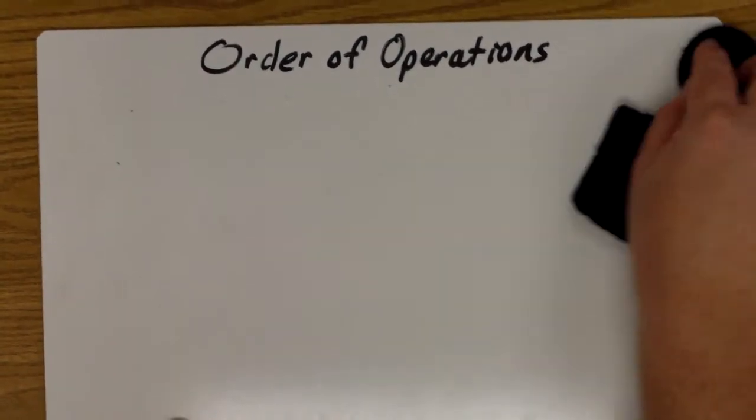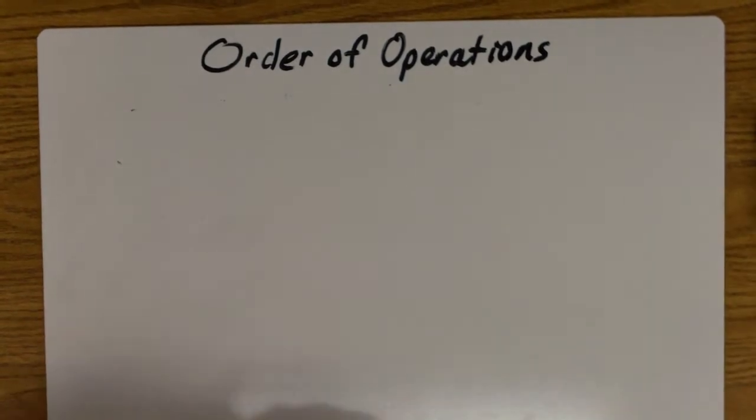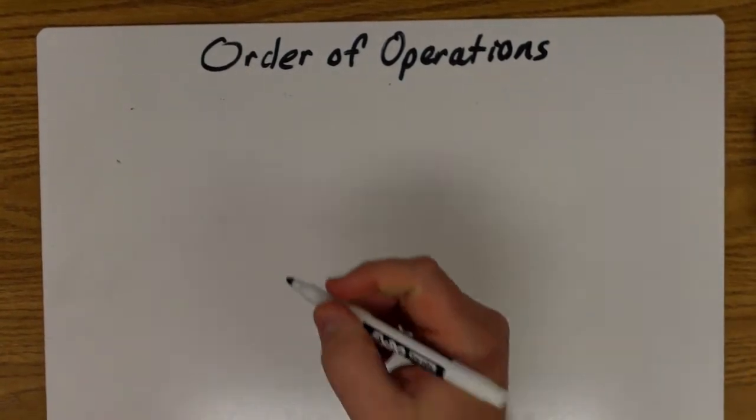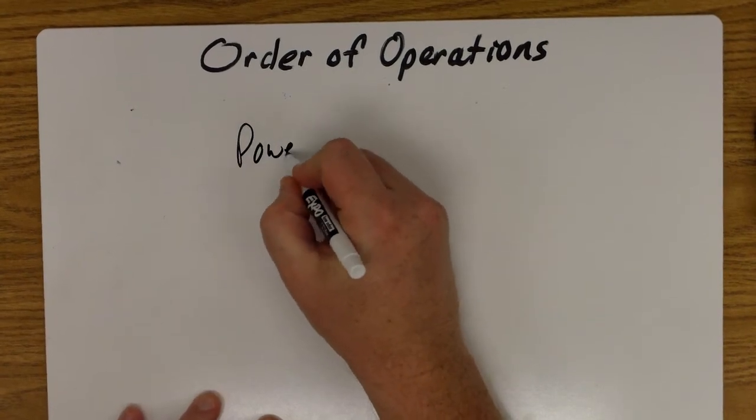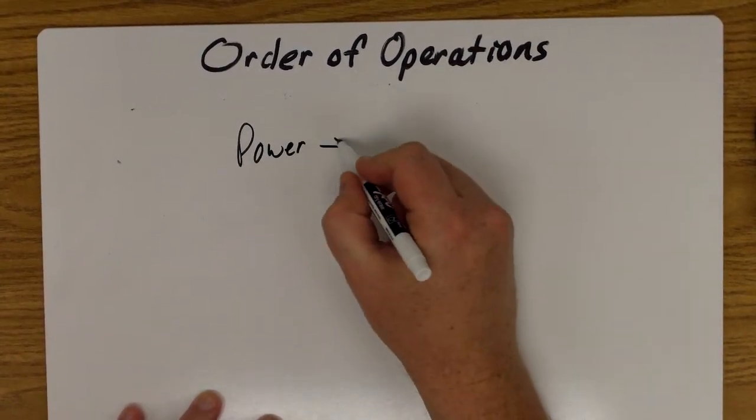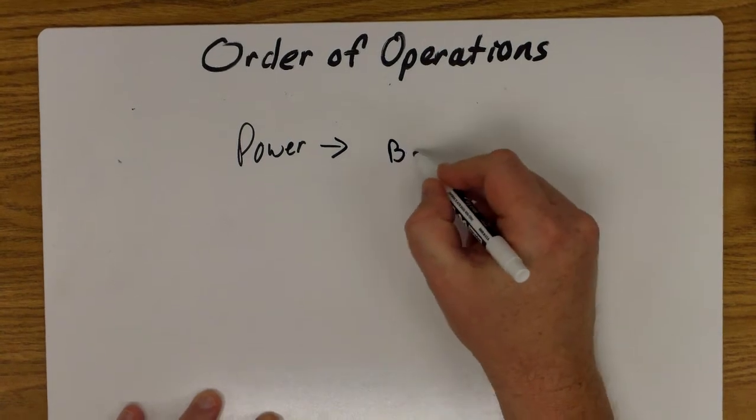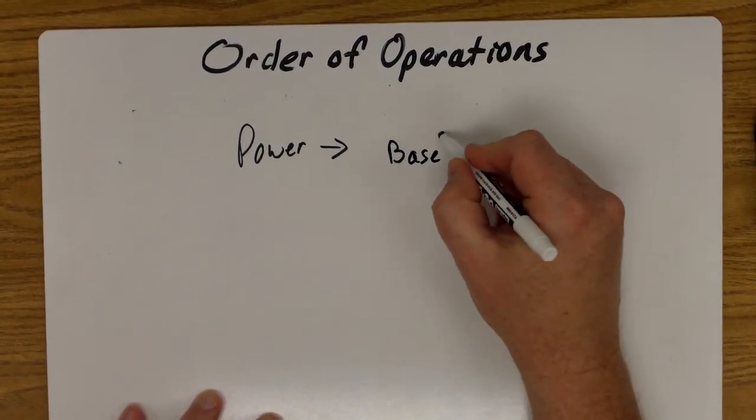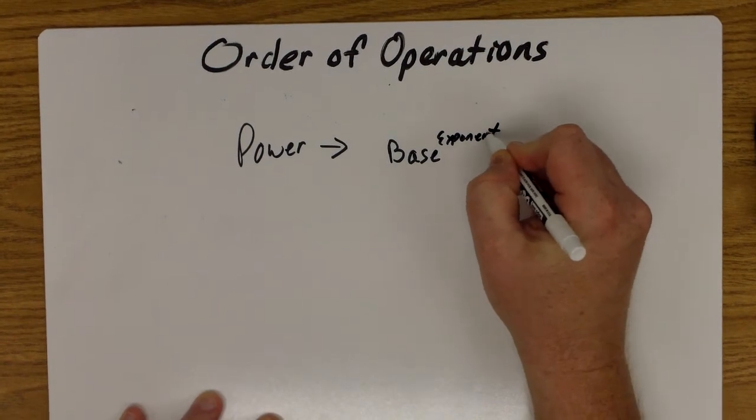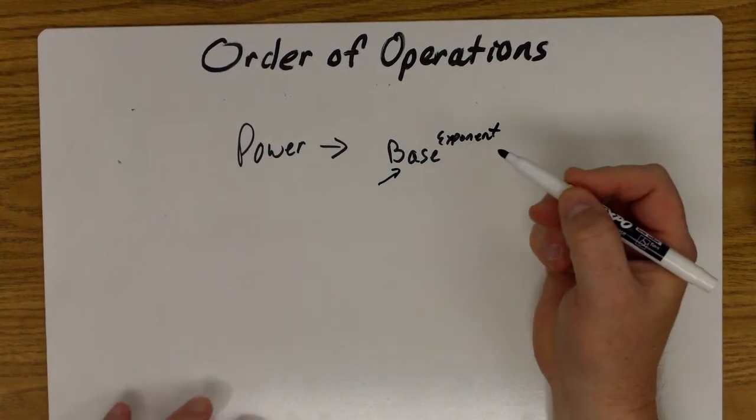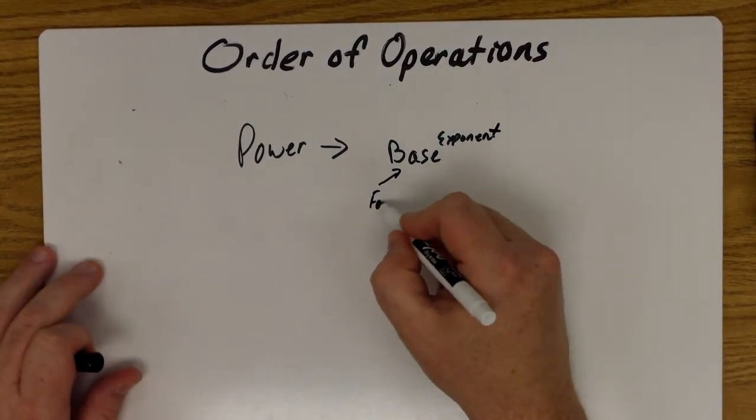quick look at powers. Want to make sure we get powers done correctly. A power comes in two parts: a base and an exponent. The base number is considered the factor, and the factor